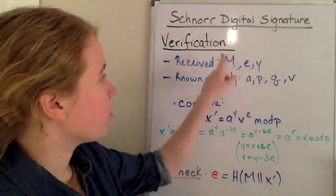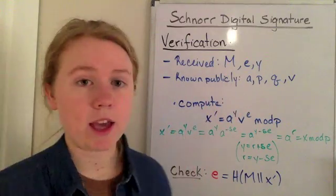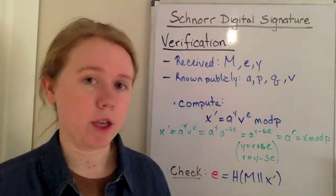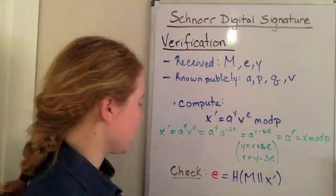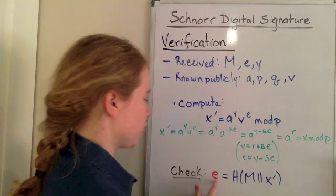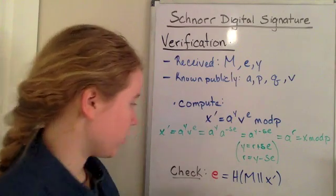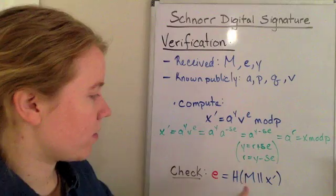However, we weren't given the original x to verify. We can't verify that because we weren't given it. So what we have to do instead is we want to check and make sure the e's are the same. So we have the hash function, we have the message, and we have the